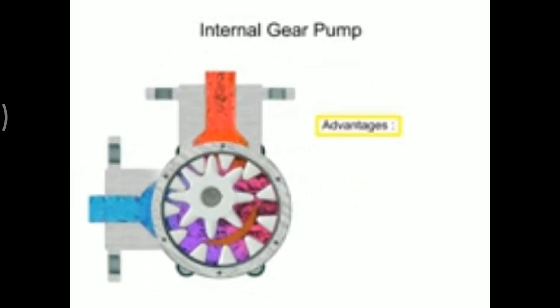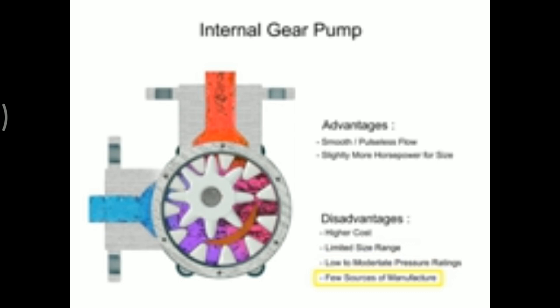Advantages of internal gear pumps are a smooth and almost pulseless flow and slightly more horsepower for its size. Disadvantages are its higher cost, limited size range, low to moderate pressure ratings, and few sources of manufacture.